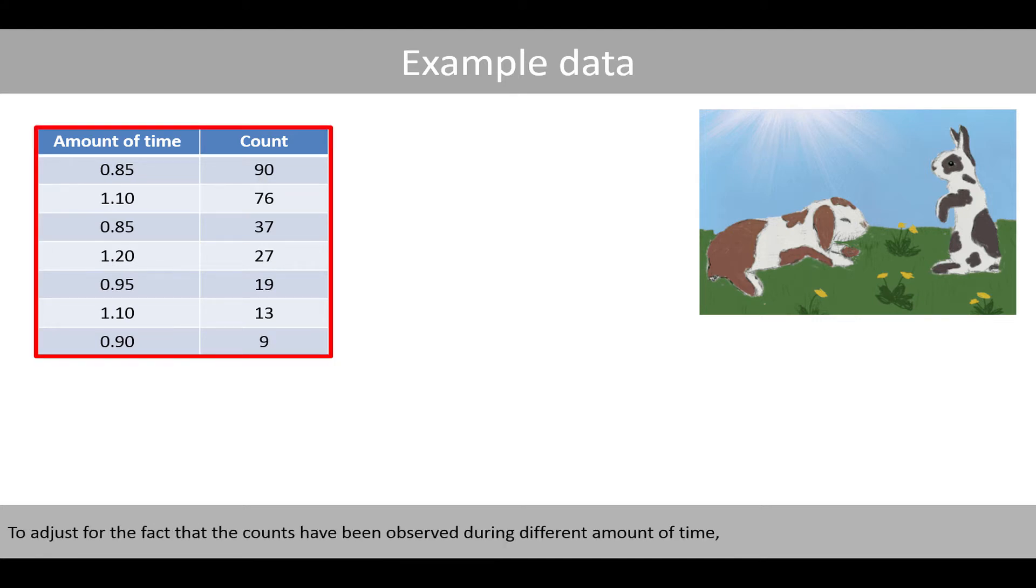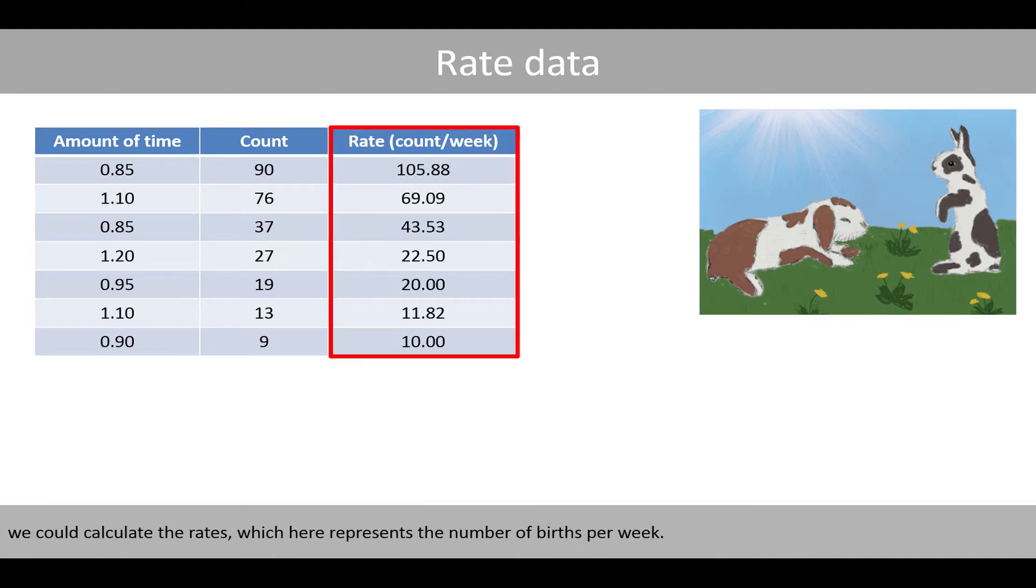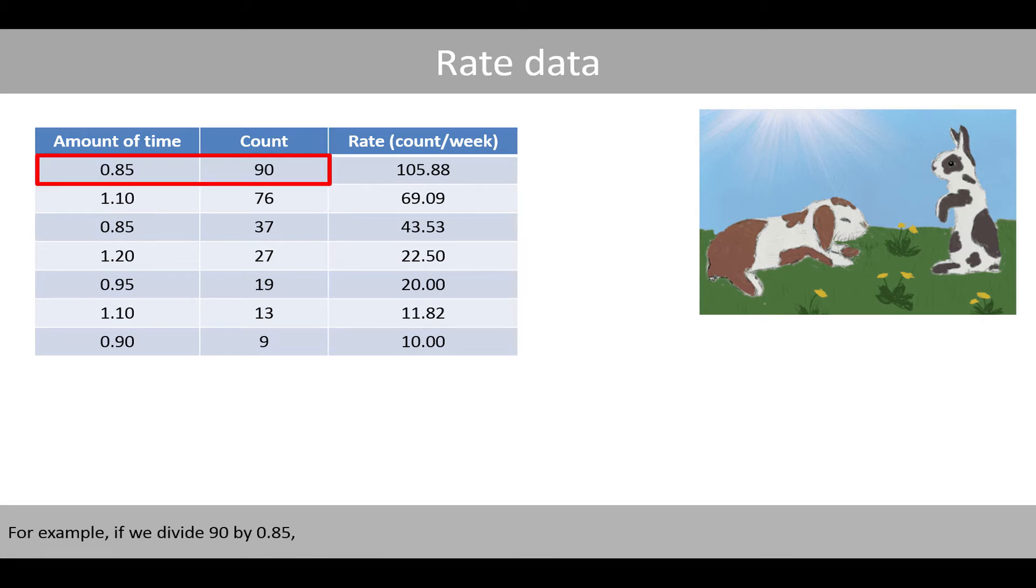To adjust for the fact that the counts have been observed during different amount of time, we could calculate the rates, which here represents the number of births per week. For example, if we divide 90 by 0.85, we see that the estimated number of births per week is about 105.88.